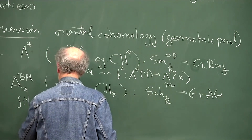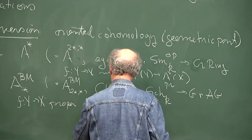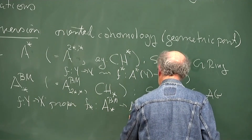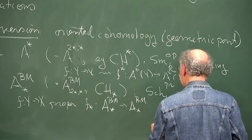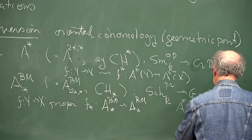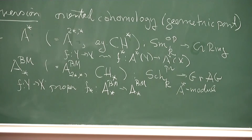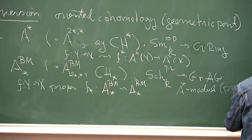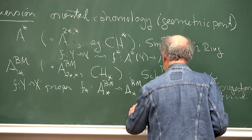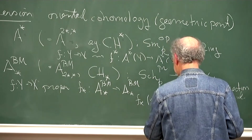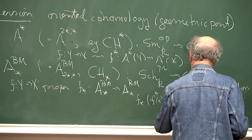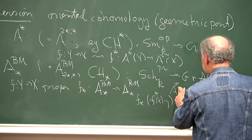If you have F from Y to X proper, then you get F lower-star from A-star to A-star, functorially. These are naturally A-upper-star modules, so this is an A-upper-star module map, which is often referred to as the projection formula. In other words, F lower-star of (F upper-star of X times Y) equals X times F lower-star of Y, where X is in cohomology and Y is in Borel-Moore homology.